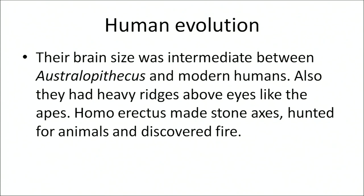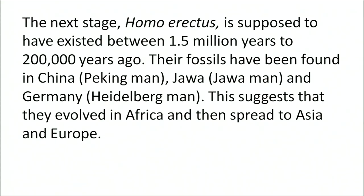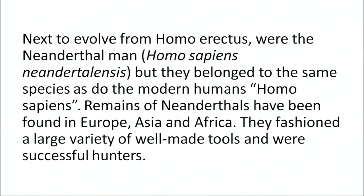Homo habilis also had heavy ridges above the eyes like the apes. Homo erectus made stone axes, hunted for animals, and discovered fire. Homo erectus is supposed to have existed between 1.5 million years to 200,000 years ago. Their fossils have been found in China, Java, and Germany, suggesting they evolved in Africa and then spread to Asia and Europe. Next to evolve from Homo erectus were the Neanderthal men, who belong to the same species as modern humans — Homo sapiens. Remains of Neanderthals have been found in Europe, Asia, and Africa, and they fashioned a large variety of well-made tools and were successful hunters.